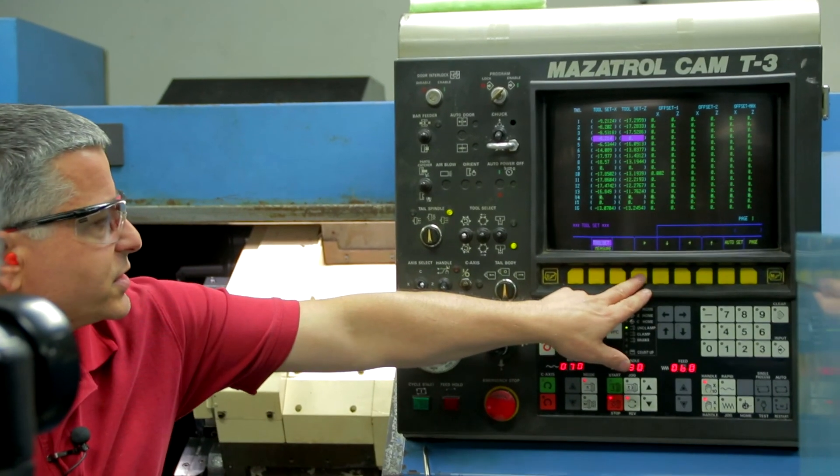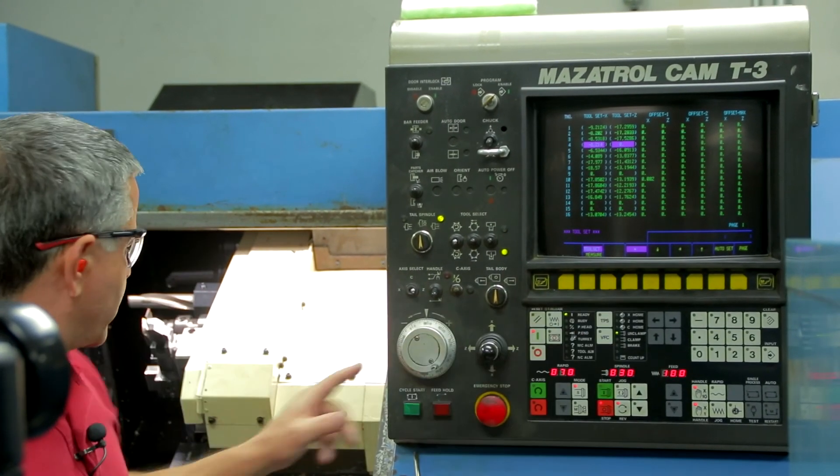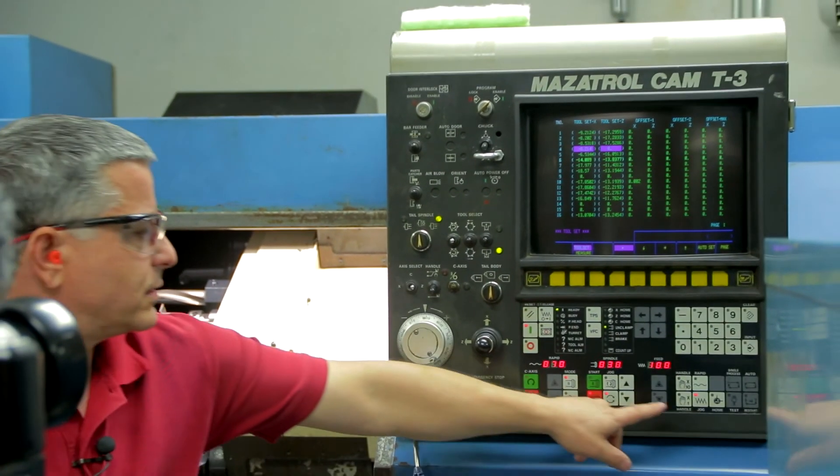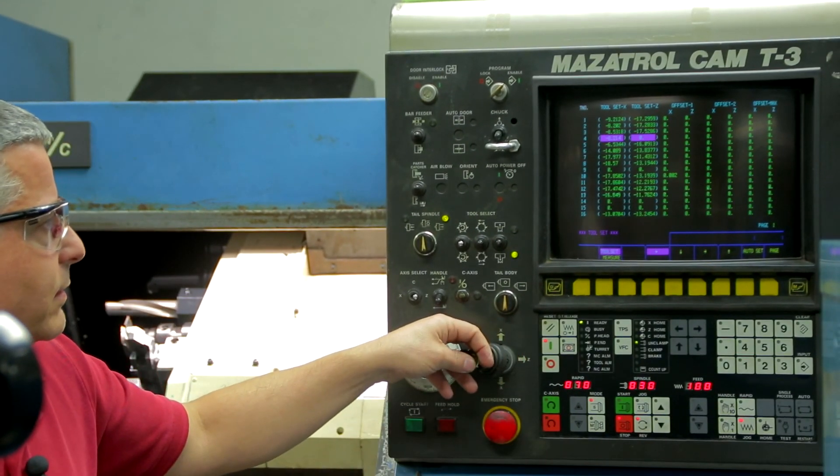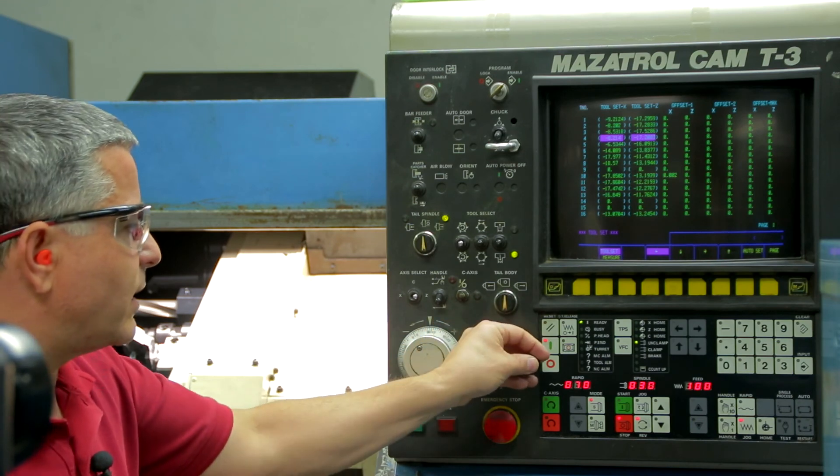And then push this arrow here, because we're going to probe it on the face. Jog comes up automatically. And then back it off.